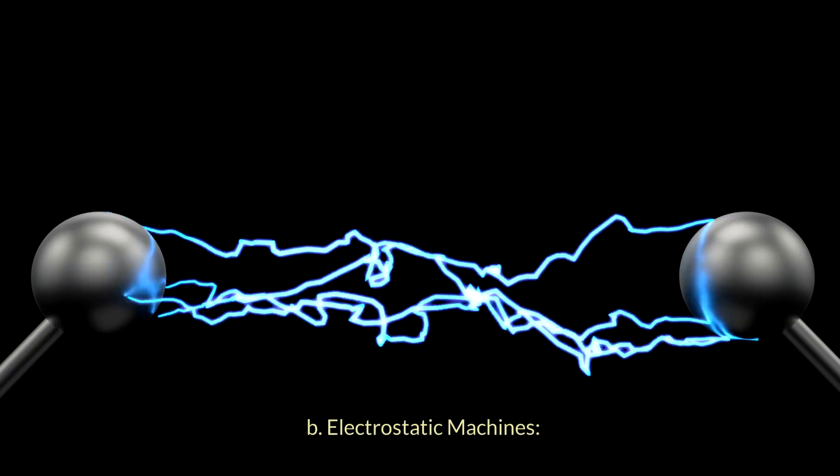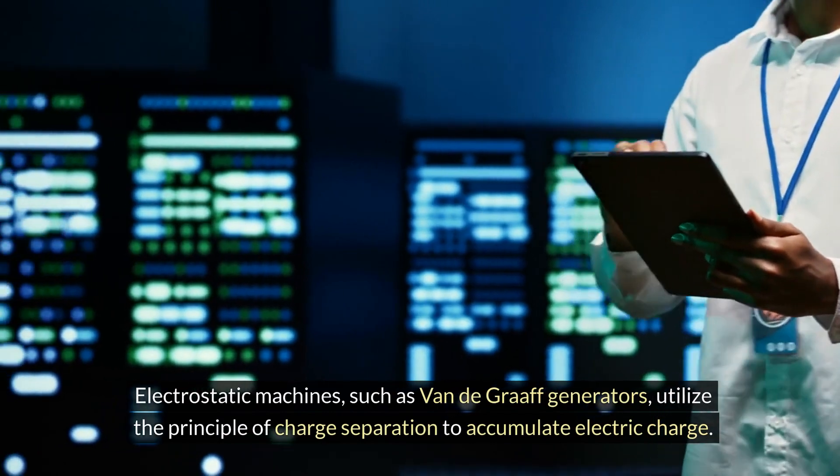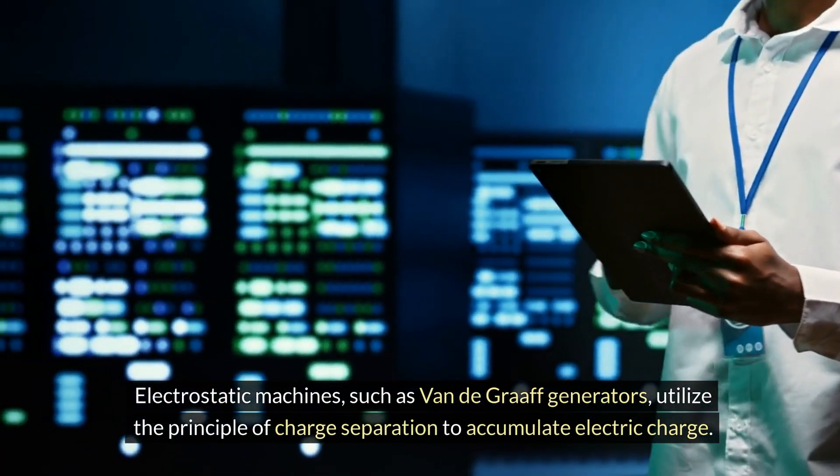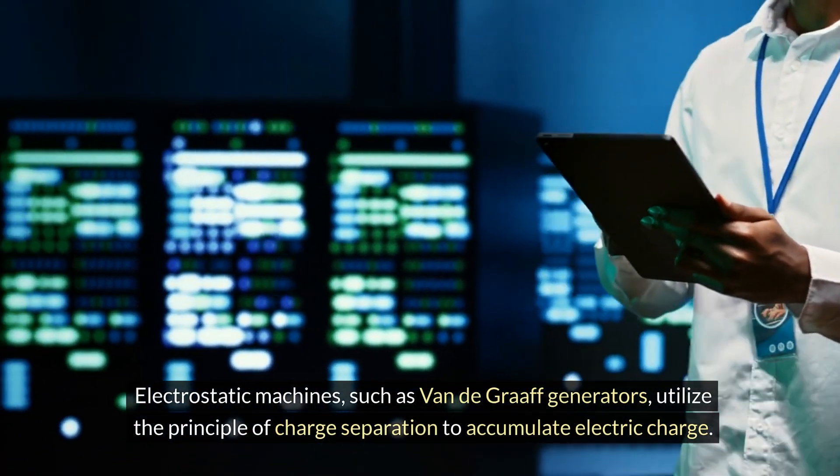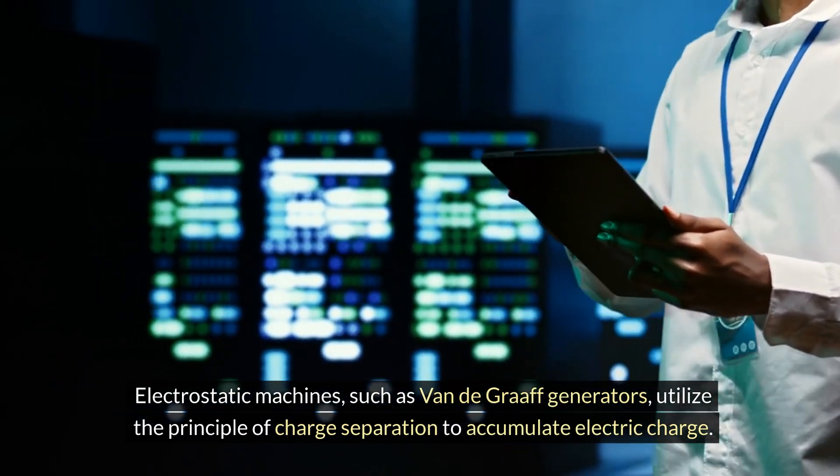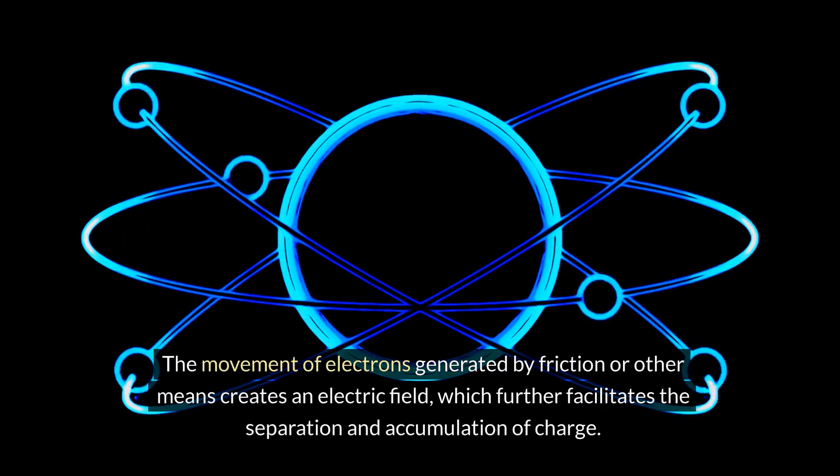Electrostatic machines: Electrostatic machines, such as Van de Graaff generators, utilize the principle of charge separation to accumulate electric charge. The movement of electrons generated by friction or other means creates an electric field, which further facilitates the separation and accumulation of charge.